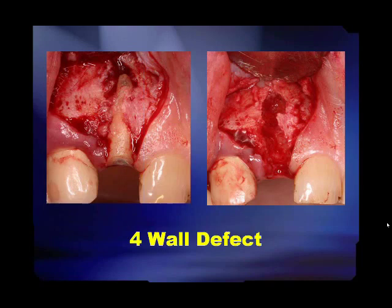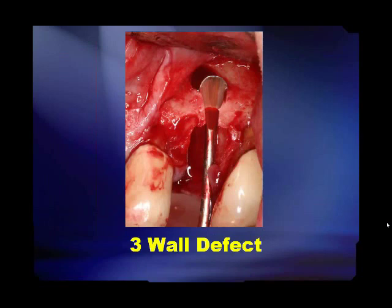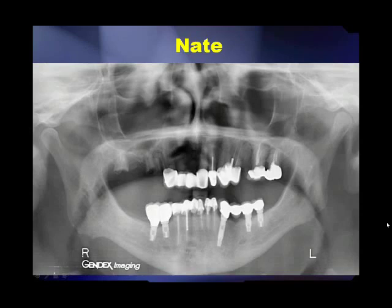If we look at a situation where a tooth has a fenestration as well as a dehiscence of the facial plate, this would be considered a four-wall defect — we have a mesial wall, distal wall, and apical wall, but the buccal wall is missing. A similar situation without an apical floor is called a three-wall defect. To treat three- and four-wall defects, we do guided bone regeneration, which is not very different from treating an extraction socket.